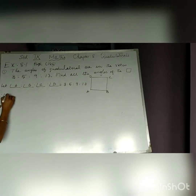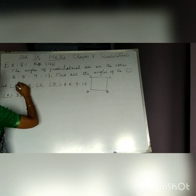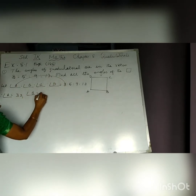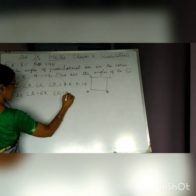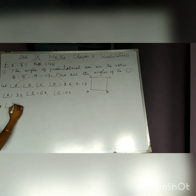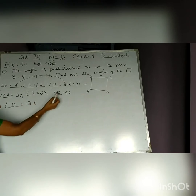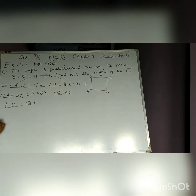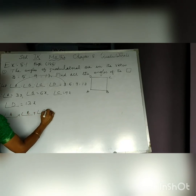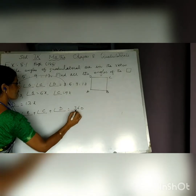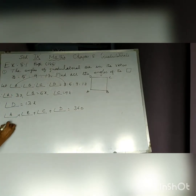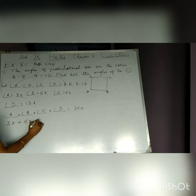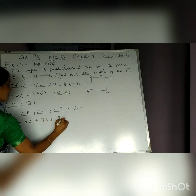Therefore, angle A becomes 3X, B is 5X, C is 9X, and D is 13X, because the ratios are given and we have taken a constant X. We know by the angle sum property of a quadrilateral, the sum of the 4 angles is 360 degrees. Therefore, replacing A by 3X, B by 5X, C by 9X, and D by 13X, we get the total equal to 360 degrees.